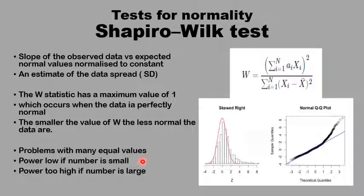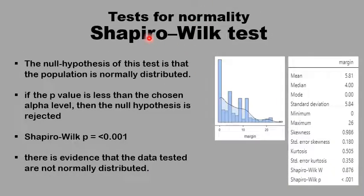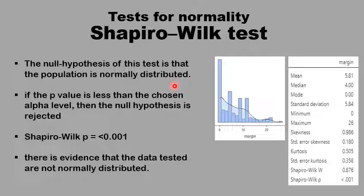With a very large dataset, the Shapiro-Wilk test becomes so powerful it detects even very minimal deviation from normality. The null hypothesis is that the data is normally distributed. If the p-value is less than the alpha level of 0.05, the null hypothesis is rejected and we conclude the data is not normally distributed. For this skewed dataset, Shapiro-Wilk W was 0.87 and the p-value was less than 0.001 — strong evidence that the data is not normally distributed.